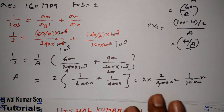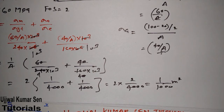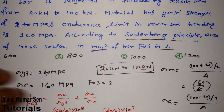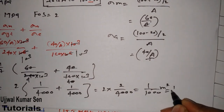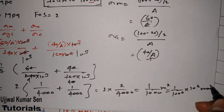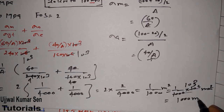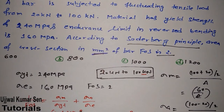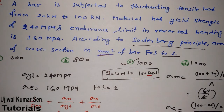We got area = 1/1000 meter square. Since the question asks for mm square, we convert: 1/1000 m² × 10⁶ mm²/m² = 1000 mm². So the area of the cross section is 1000 mm², which matches option C. Option C is the correct answer for this question.